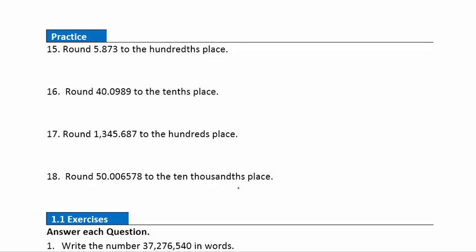Question 15: we're rounding this number to the hundredths place, which is the seven. We look to the right — that's a three, which tells us that seven is going to stay the same. So we should end up with five and eighty-seven hundredths. Question 16: we're rounding to the tenths place, which is the zero. It's okay to round a zero — no different than the others. Looking to the right, that nine tells us to round this zero up one. So we get a final answer of forty and one-tenth.